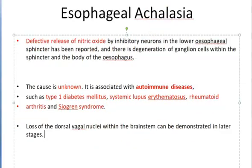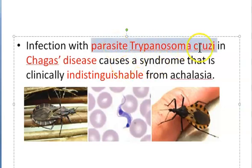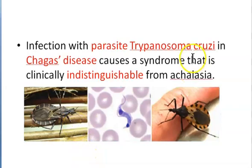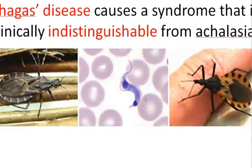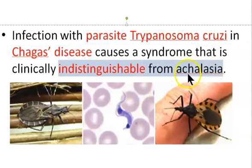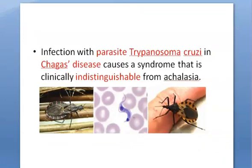Continuing with the causes: it can also be because of infection with the parasite Trypanosoma cruzi — American trypanosomiasis. This parasite enters the body via a bug vector. If the bug was infected with Trypanosoma cruzi and it bites you, the parasite enters your bloodstream, causing a disease called Chagas disease. You will have a condition very similar to — and clinically indistinguishable from — achalasia. So American trypanosomiasis is one of the causes to write in the exam.